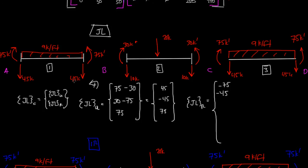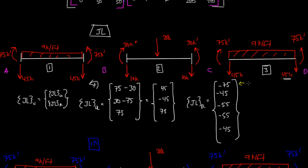Then we have a 45 going down and a 10 going down, so when we add those two together we get negative 55. Then here at C was delta 7, so we have a negative 10 and a negative 45, that makes a negative 55. And then finally we have a 45 going down, so that's a negative 45. Notice that the first is a rotational degree of freedom, and the rest are vertical shear degrees of freedom.